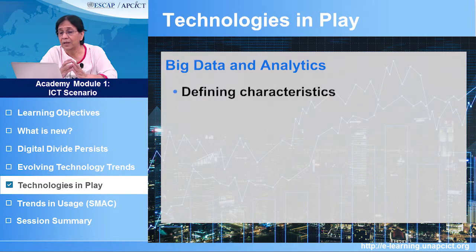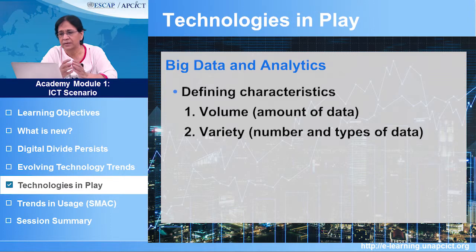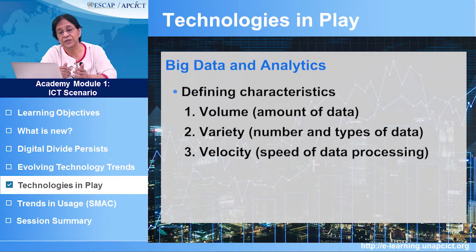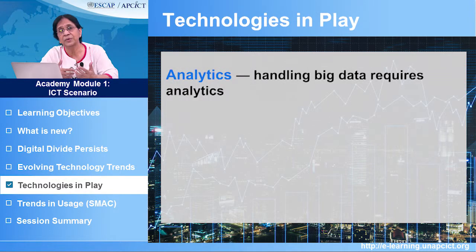Big data has defining characteristics. One is volume — that is the amount of data. Two is variety — that is the number and types of data. And three is velocity — that is the speed of data processing. These three are the major features of big data. Big data alone means nothing; data need to be analyzed, and that is what has come to be known as data analytics.